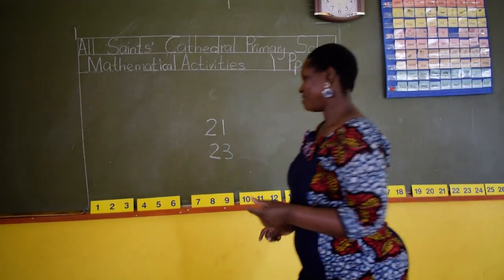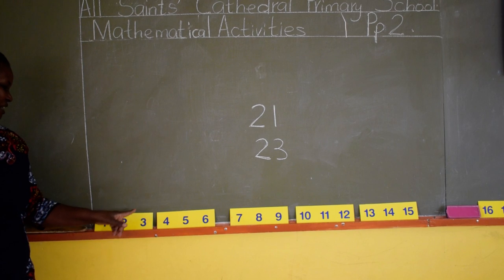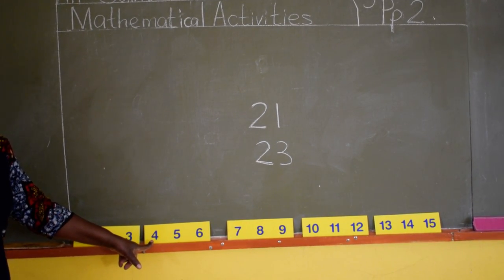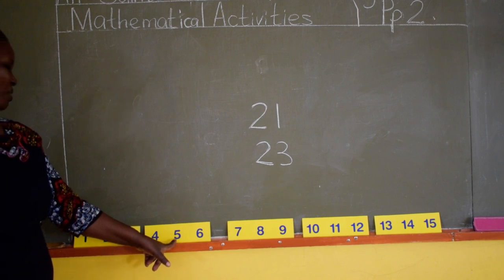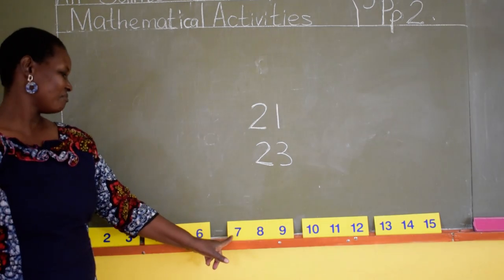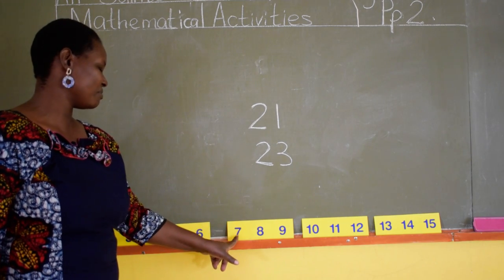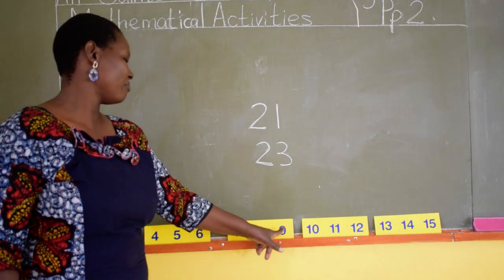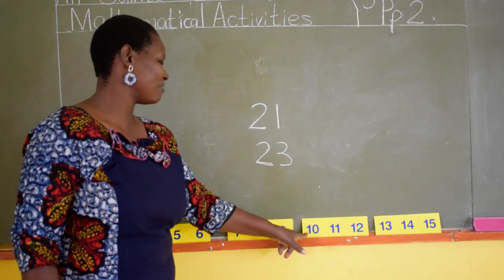Someone took my number one. Someone took my number one and gave me number two. And gave me number two. Someone took my number two and gave me number three. And gave me number three. Someone took my number three and gave me number four. And gave me number four. Someone took my number four and gave me number five. And gave me number five. Someone took my number five and gave me number six. And gave me number six. Someone took my number six and gave me number seven. And gave me number seven. Someone took my number seven and gave me number 8. Someone took my number 8 and gave me number 9. Someone took my number 9 and gave me number 10.